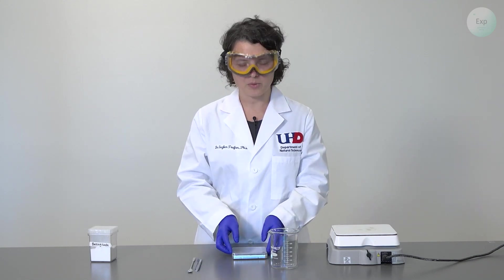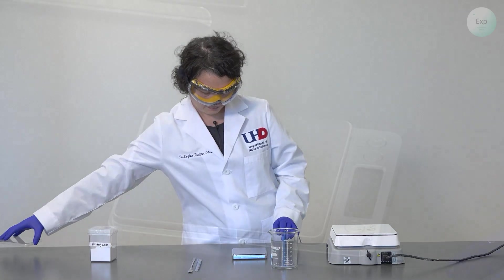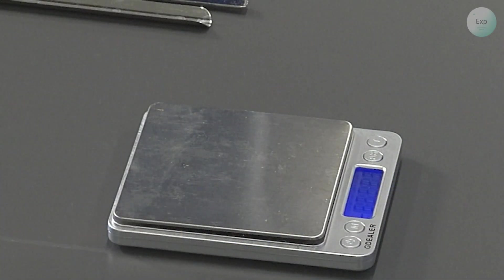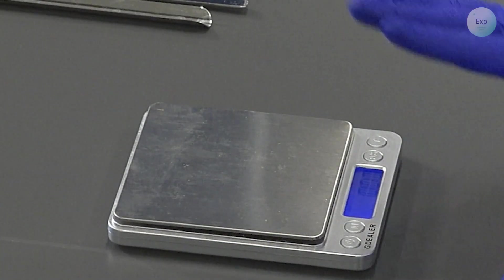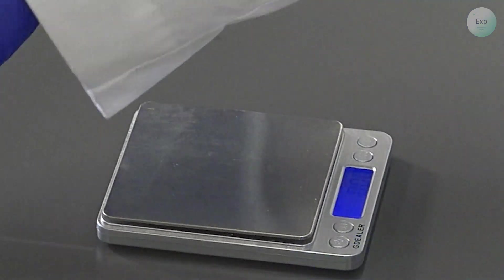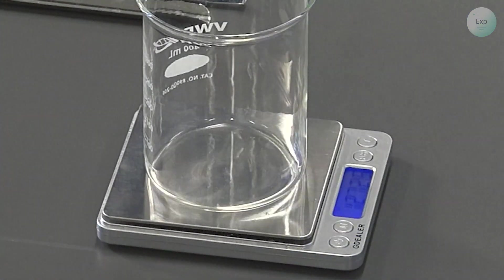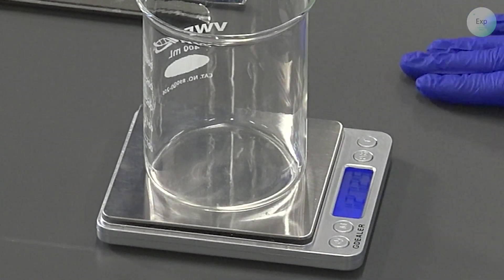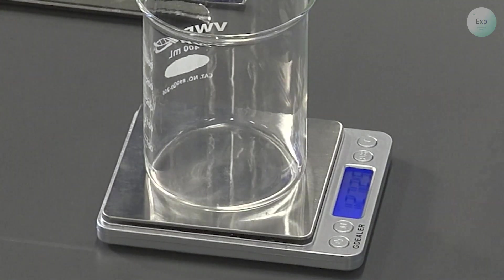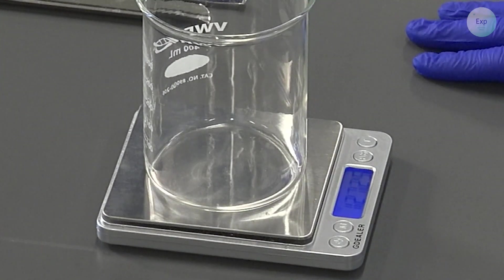The first thing I'm going to do is turn on my scale. And when it shows 0.00 I will place my beaker on top of it. I will record the mass of the beaker as is because we will come back to this measurement a little bit later.